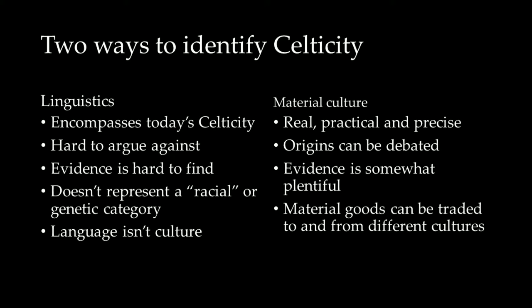We can also look at the material culture — things that were left behind, either objects, people, or animals, that define Celticity. We can easily identify Celtic art, Celtic metalworking, and Celtic burial rites. The origins of such things can be debated and the evidence is somewhat plentiful. But material goods can be traded to and from different cultures. We have found, for example, Roman wine in Celtic territory and also Celtic metalworks in Germanic territory.